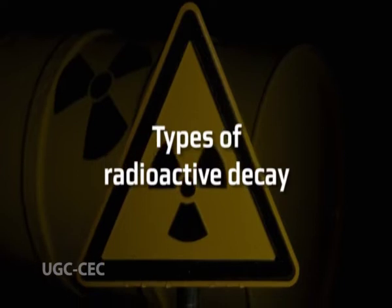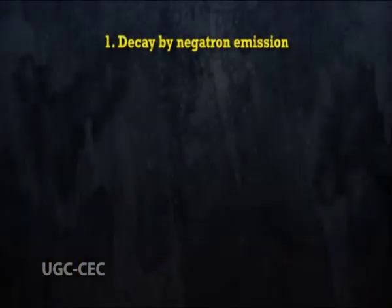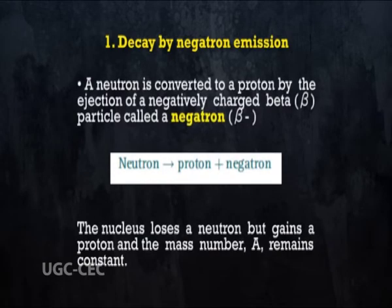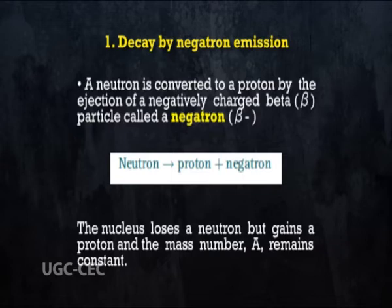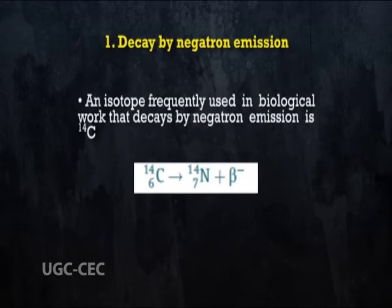Types of Radioactive Decay. Decay by Negatron Emission: a neutron is converted to a proton by ejection of a negatively charged beta particle called a negatron. The nucleus loses a neutron but gains a proton and the mass number A remains constant. An isotope frequently used in biological work that decays by negatron emission is Carbon-14.